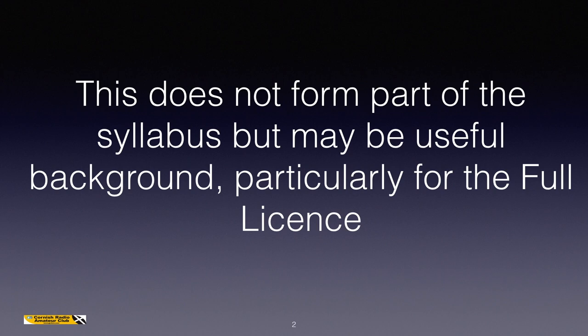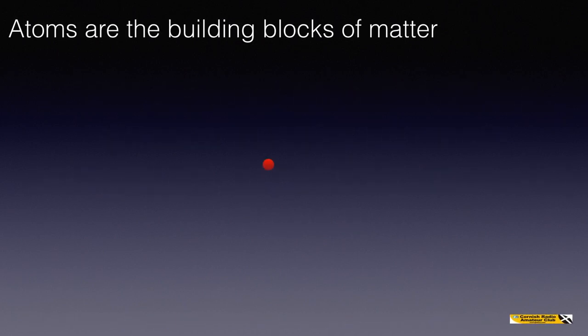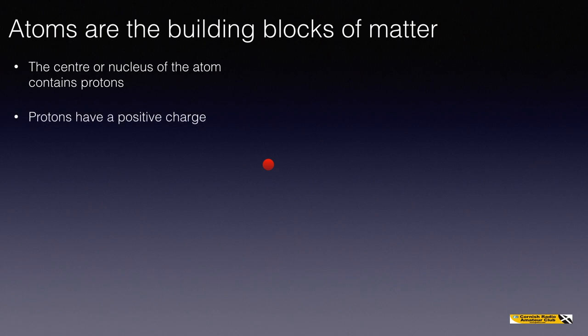So let's make a start. Atoms are the building blocks of matter, and on the screen there you can see a single red dot representing a proton. A proton is in the centre, or the nucleus, of an atom. So the centre, or nucleus, of the atom contains one or more protons. Now, protons have a positive charge.